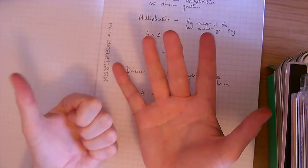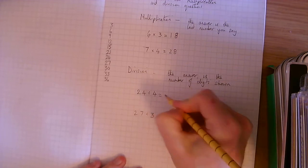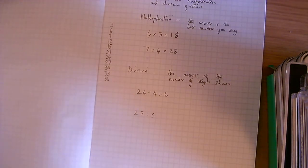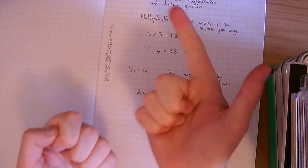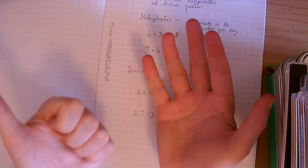And there are 6 digits showing. So the answer is 6. So what we're doing is we're saying, how many 4's are there in 24? Well, there's 1 lot, 2 lots, 3 lots, 4 lots, 5 lots, 6 lots.